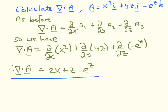This question asks us to calculate the divergence of another vector field. As before, here is our definition. We have to differentiate with respect to x, add the derivative with respect to y, and add the derivative with respect to z. So we have the derivative with respect to x of x squared, plus the derivative with respect to y of yz, plus the derivative with respect to z of minus e to the z. This gives us 2x, this gives us z, and this is minus e to the z. This is our result for the divergence of this vector field.